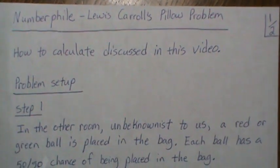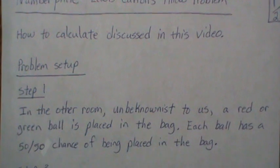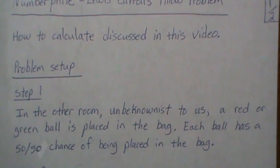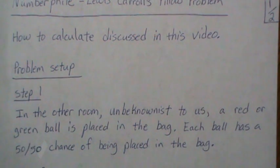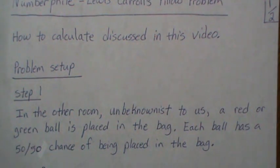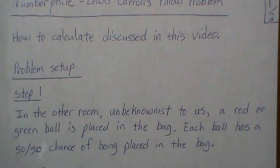First let's set up the problem as I like to think about it. Step one: in the other room, unbeknownst to us, a red or green ball is placed in the bag. Each ball has a 50-50 chance of being placed in the bag.